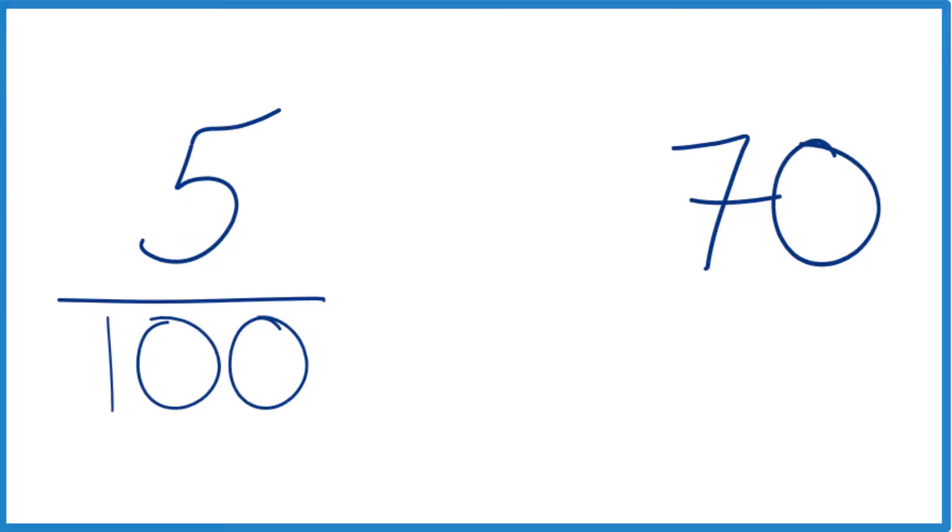And the of, let's think of that as multiplication. So 5 over 100 times 70. You might also think of 70 as 70 over 1, so when we do the multiplication, everything lines up.